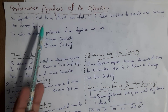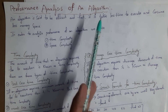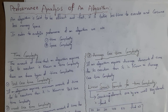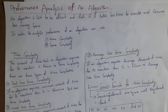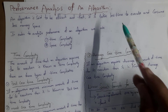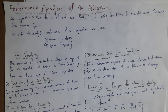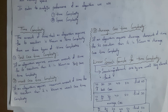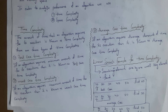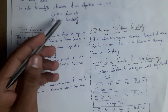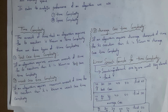An algorithm is said to be efficient and fast if it takes less time to execute and consumes less memory space. Performance of an algorithm is said to be good only if it takes less time to execute and consumes less memory space. To analyze performance of an algorithm, we use time complexity as well as space complexity.